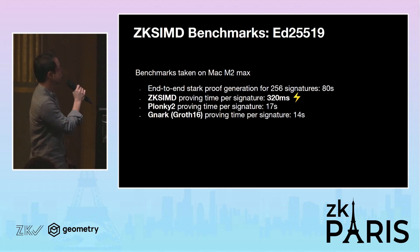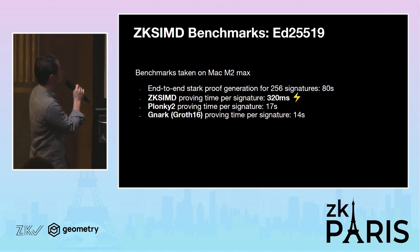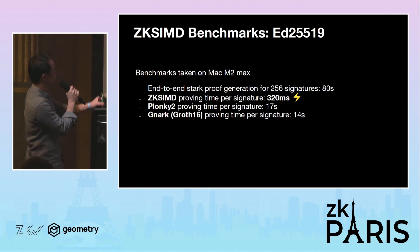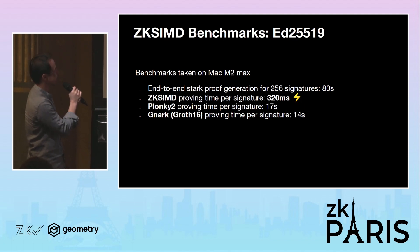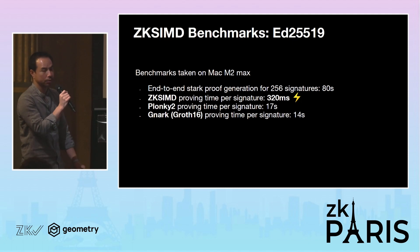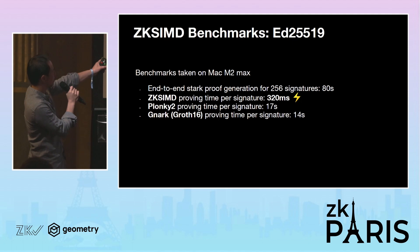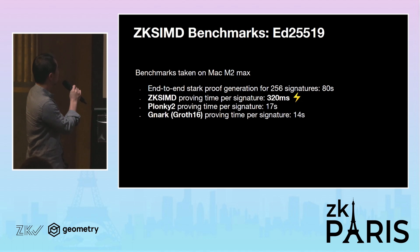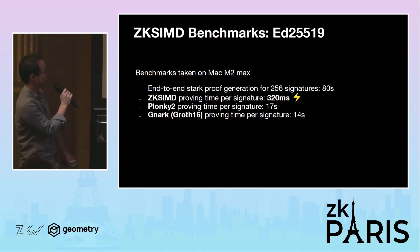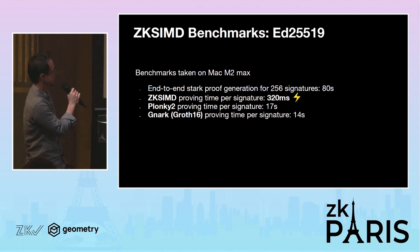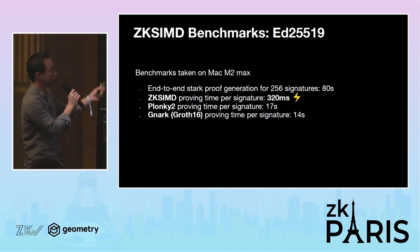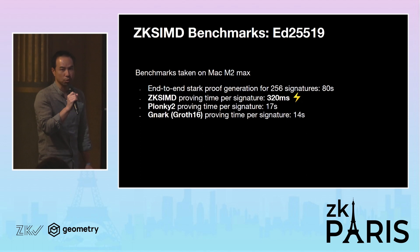We have some benchmarks on this specific circuit. We are able to verify 256 signatures in 80 seconds, which amounts to about 300 milliseconds per signature. Given some comparison to other proof systems: for Plonky2 and Gnark, they're somewhat similar — around 17 and 14 seconds respectively. So this STARK-based approach is about an order of magnitude faster.